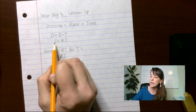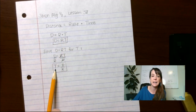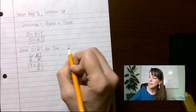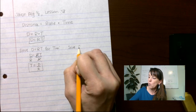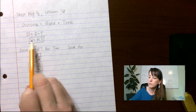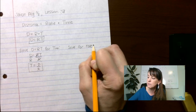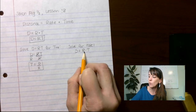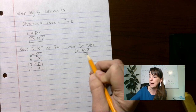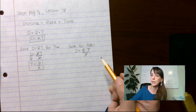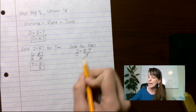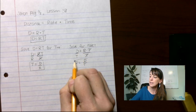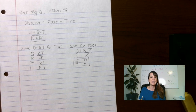So there's another version of that equation — we've solved for distance and we've solved for time. Now we need to solve for rate. Distance equals rate times time. The opposite of multiply is to divide, so I want to get rate by itself — I'm going to divide by time. Those two cancel and I get rate all by itself. What I do to one, I've got to do to the other. So r equals distance divided by t.